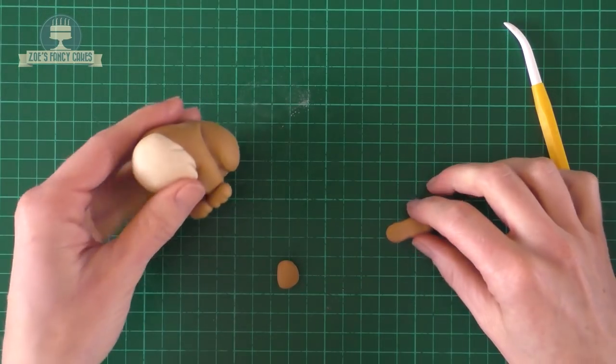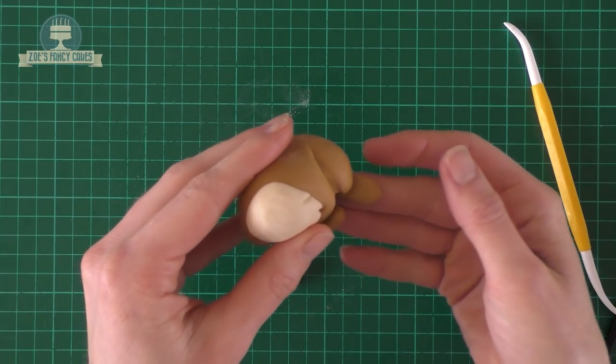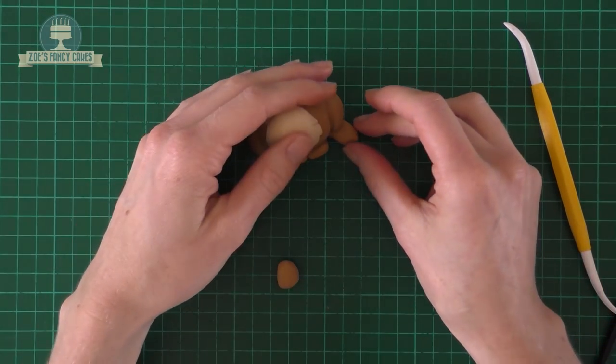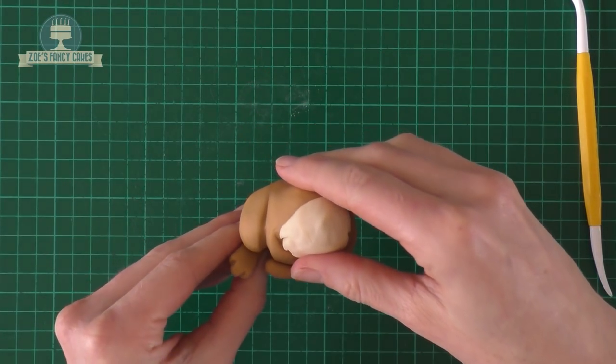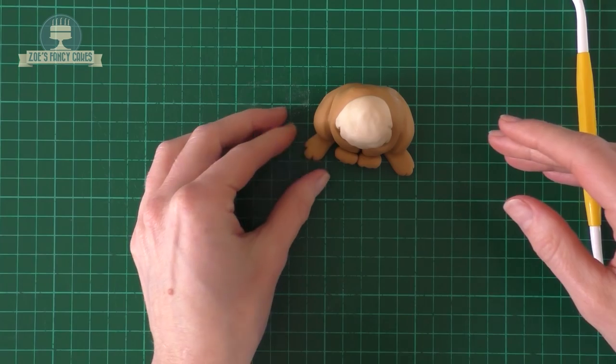I'm just going to put a bit of water on there and we're going to stick it underneath the wide part of the leg. Same on the other side. And you can play around with the positioning of the feet, they don't have to be underneath, you might want them positioned up in front of the body a little bit.